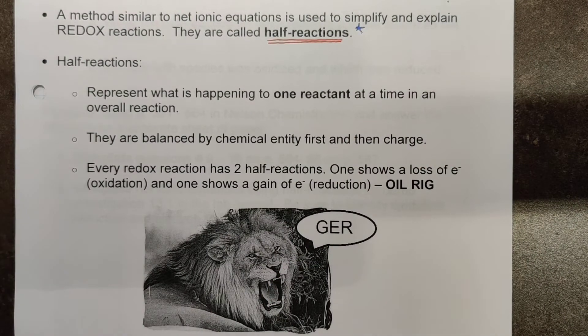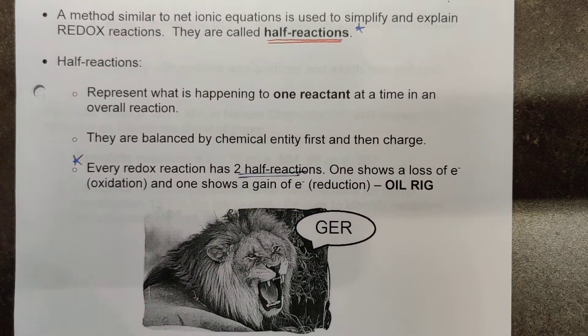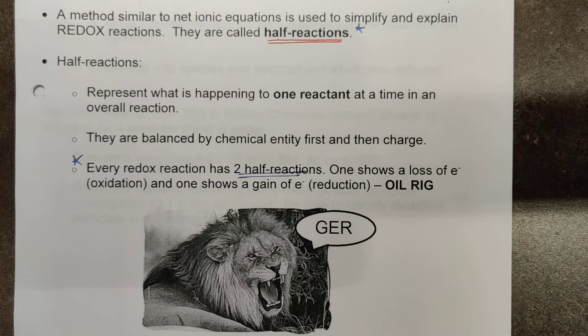So what exactly is a half reaction? They represent what is happening to one reactant at a time in the overall reaction. When we look at these, we are going to balance the chemical entity first, and then we will balance the charge. And in every redox reaction, it is important for you guys to realize that there must be two half reactions. I cannot have one without the other. If something is to be reduced and gain electrons, something else must lose those electrons for them to be gained by a new species.